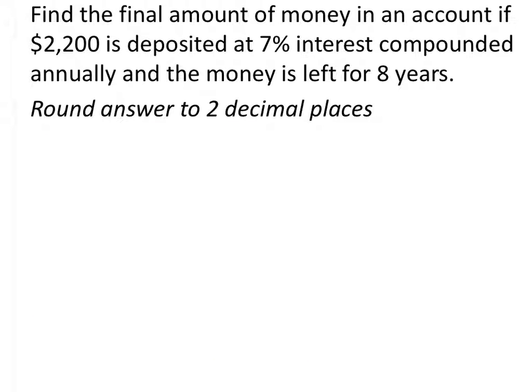So let's consider this original problem. And this is a unit about exponents. So as it turns out, we can use an exponent in order to solve this problem rather quickly. So we'll start with this 2,200. And from there, we're going to multiply this by 0.07. That represents the 7% interest.